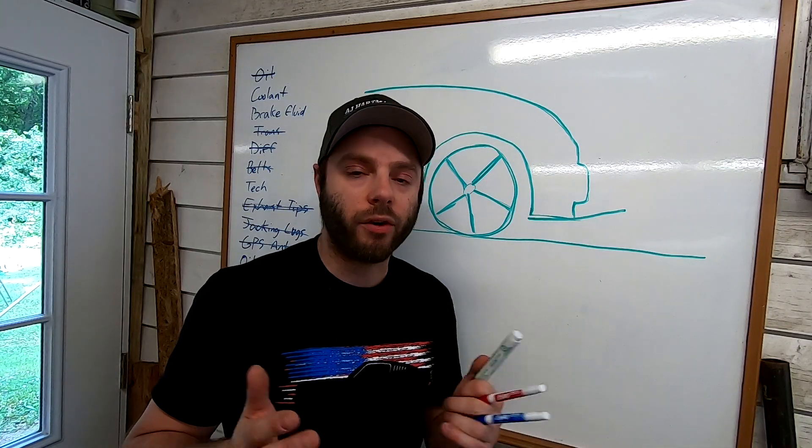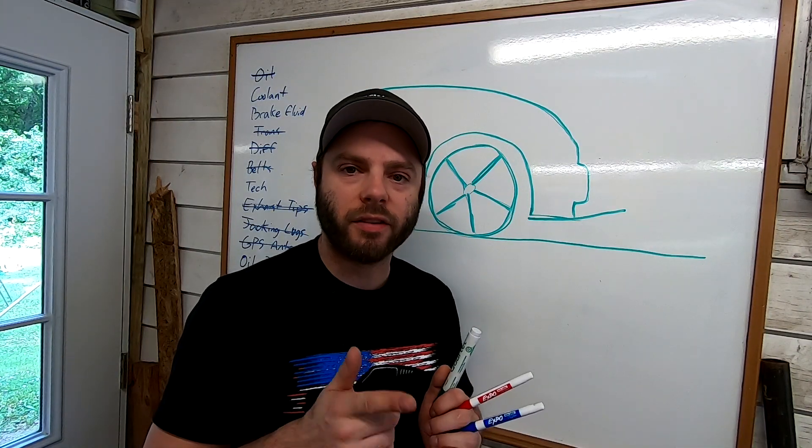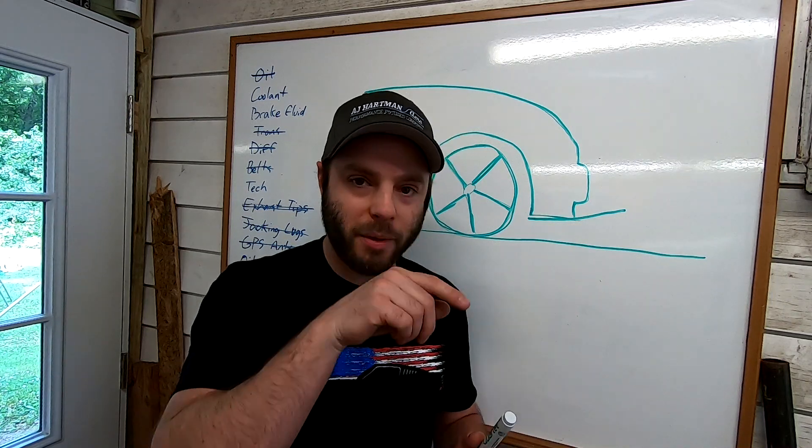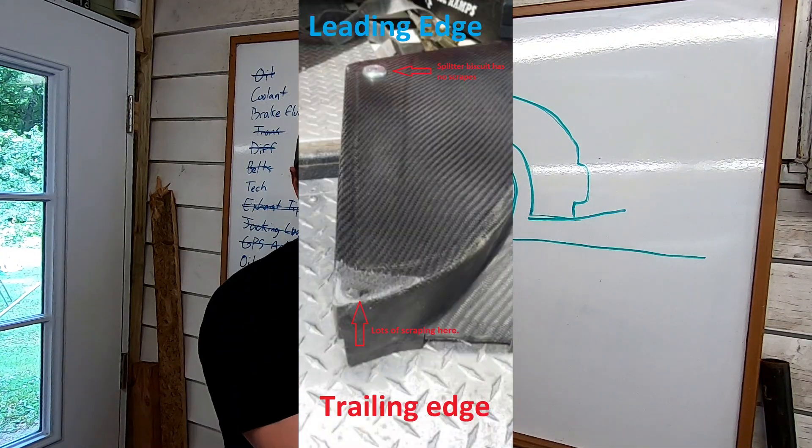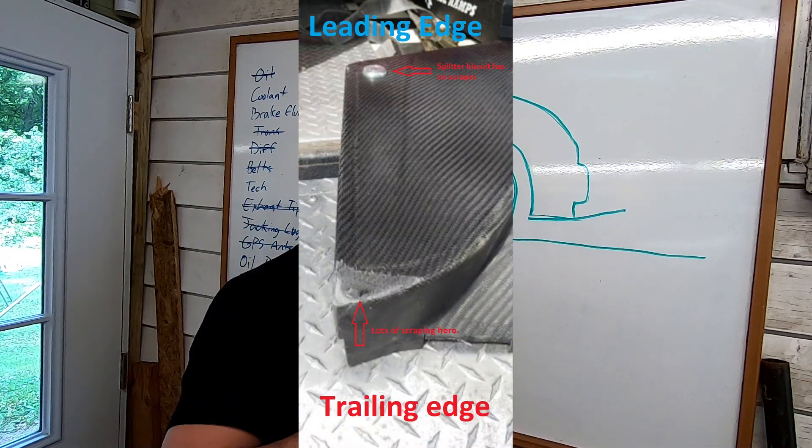A fellow racer with a Corvette which runs one of our C5 splitters on it sent me this picture. I'll overlay it on the screen right now and that wear down, the wore down area on the bottom left is actually the trailing edge of the tunnel.